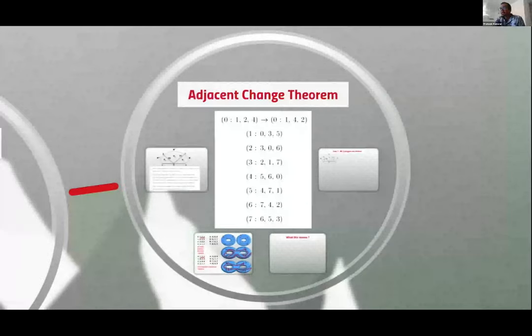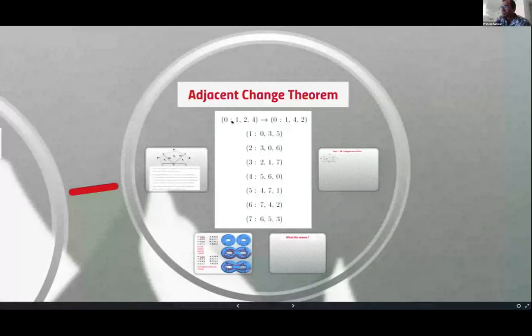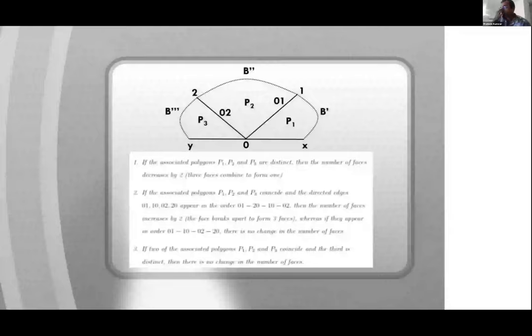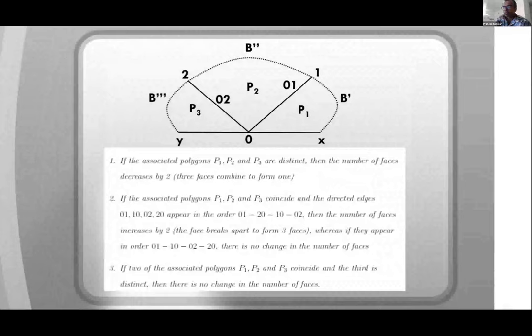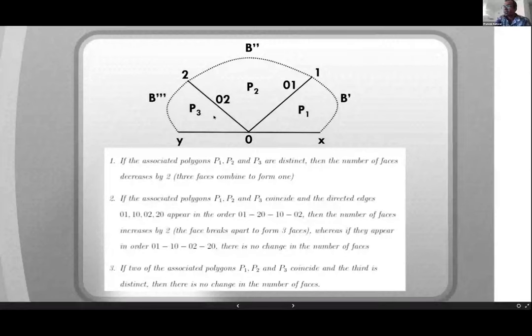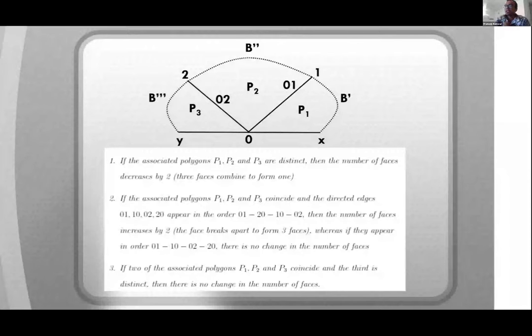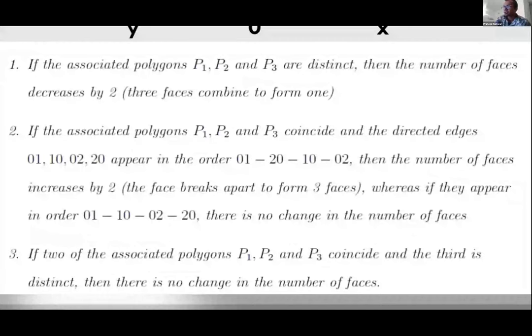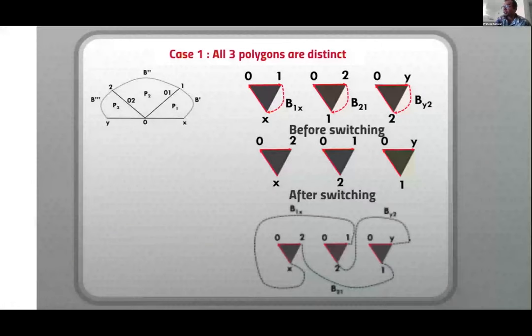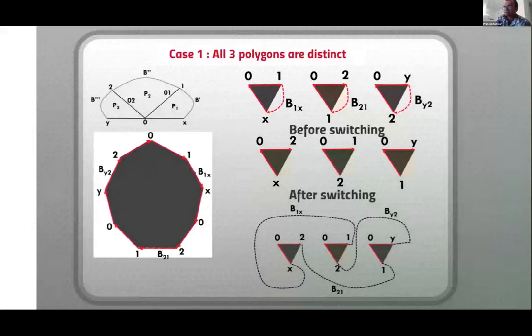One more thing we need to know before the main result is a theorem. The question is, let's say I start with this particular rotation system and I pick one of the vertices and I make one switch, how does that change the genus of the embedding, or if it does? This theorem gives us control over one of three things that can happen. Either there is no change in the number of faces, meaning no change in the genus, or you have three faces that combine to form one so the number of faces decreases by two, or you have one face that breaks down into three faces.